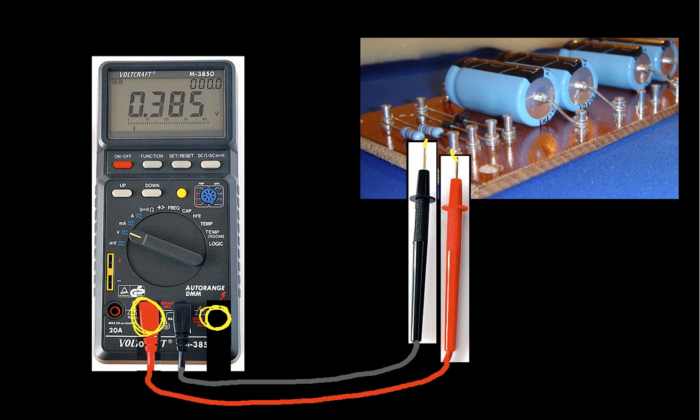Now, in order to measure current, that current actually has to flow through the meter. So, in other words, the path that I need my current to take is to flow through the red probe, up here into the meter, where the meter does its thing, and back out the black probe, and then through the rest of the circuit that I'm interested in.